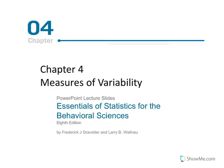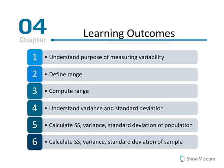Chapter four: Measures of Variability, part one. The learning outcomes for this chapter are as follows. When we're done, we'll understand the purpose of measuring variability. The word variability should convey an idea of consistency — how similar scores are to one another and, more importantly, how similar scores are to the mean of the distribution. Measures of variability are going to help us assess how well the mean of a distribution represents all the scores in that distribution.